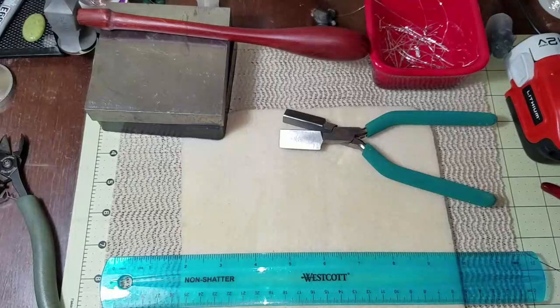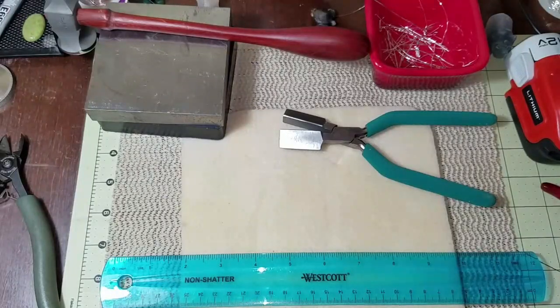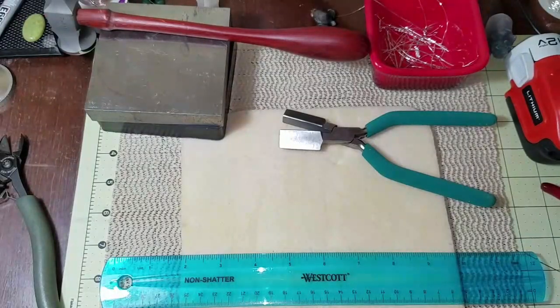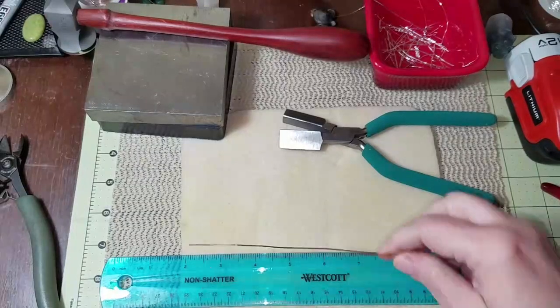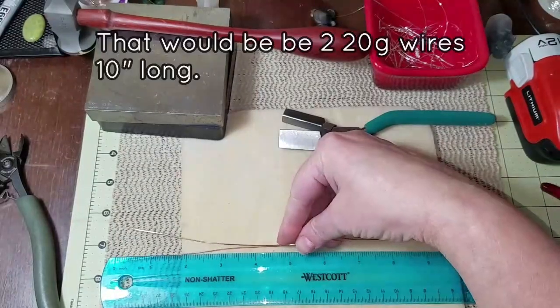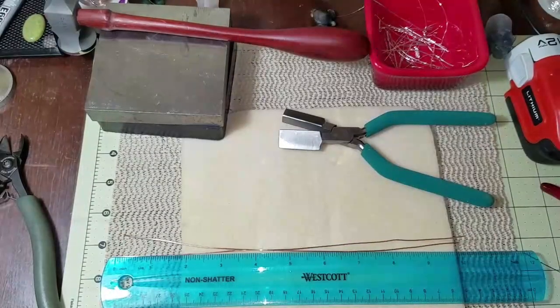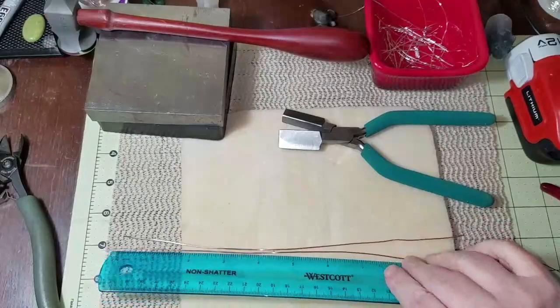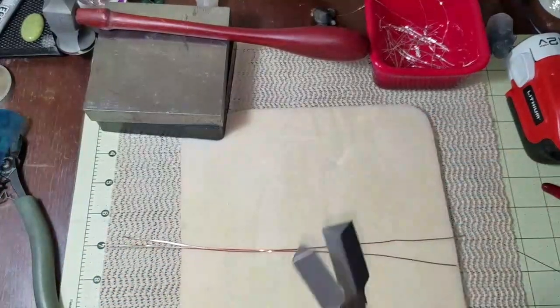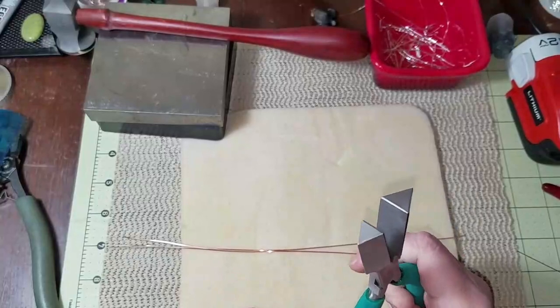I have never done this before, so let's see if we can do it. I've got two 20 gauge pieces of copper wire that are 10 inches long and we're going to play with my triangle shaped wubbers.